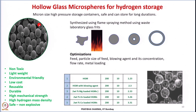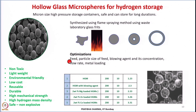These micron-sized hollow glass microspheres can be synthesized through various routes. One route is the flame spraying method, wherein different glass compositions can be used to produce these hollow glass microspheres. These are spheres hollow inside with several pores on their periphery that allow hydrogen to enter under certain temperature and pressure conditions. Various optimizations are done: starting raw material, particle size, blowing agent to create pores in the walls, concentration of blowing agents, flow rate, and metal loading to improve thermal conductivity.